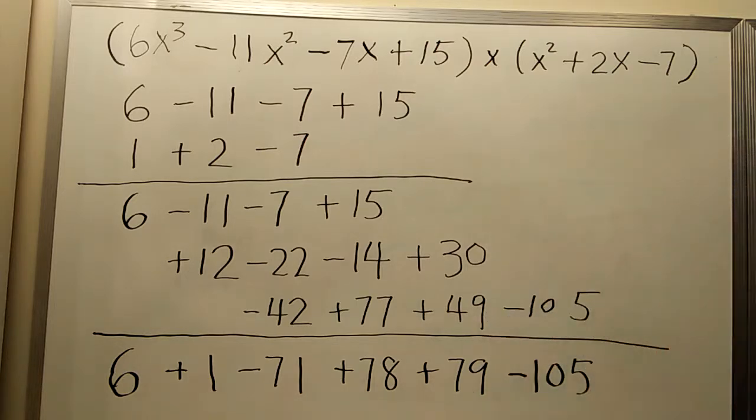So we used the method of detached coefficients. Our final result contains only the coefficients. The final step is to add x to this line. This is x to the power 0, this is x to the power 1 and power 2, power 3, power 4, power 5. Let's add x.